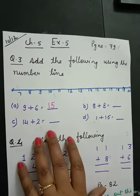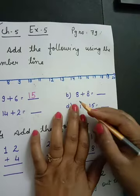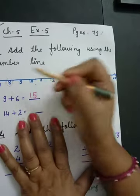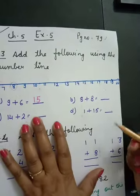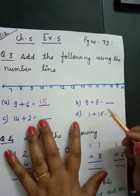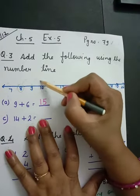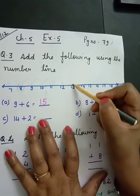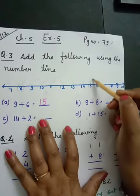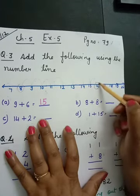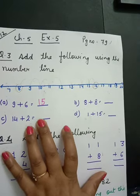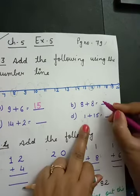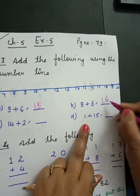Next: 8 plus 8. Start at 8 and go 8 steps ahead. 1, 2, 3, 4, 5, 6, 7, 8. So what answer you have got? 16. Right, 16.